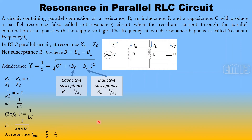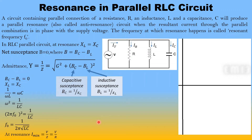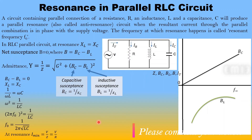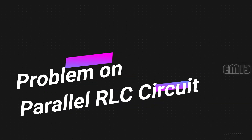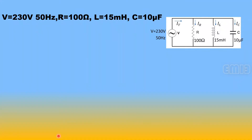Resonance in a parallel circuit can be explained using a frequency response diagram, with frequency on the x-axis and impedance, susceptance, and current on the y-axis. Capacitive susceptance BC has a linear relationship with frequency, while inductive susceptance BL is nonlinear. At the resonant frequency f0, BC equals BL so net susceptance B = 0, current from the source is minimum at V/R, and impedance is maximum at Z = R.